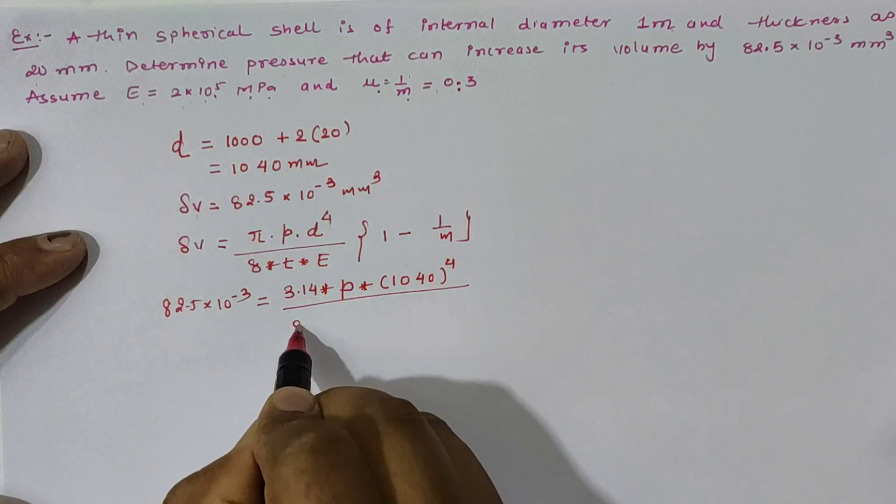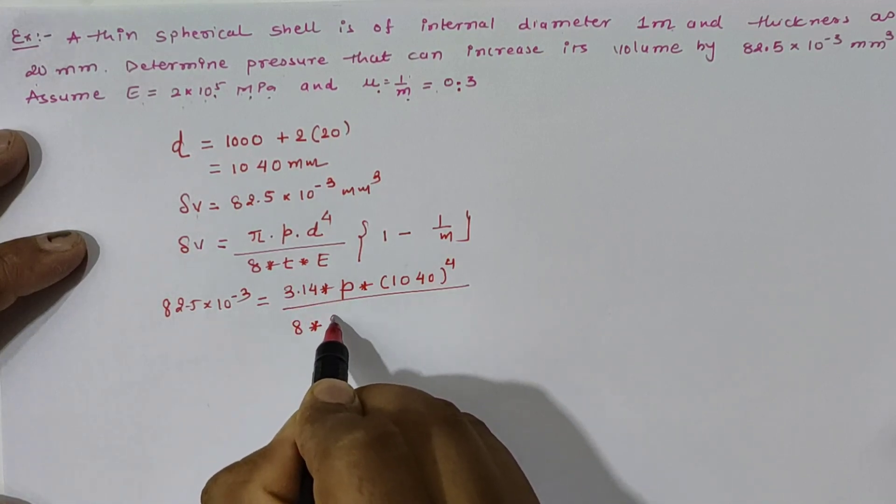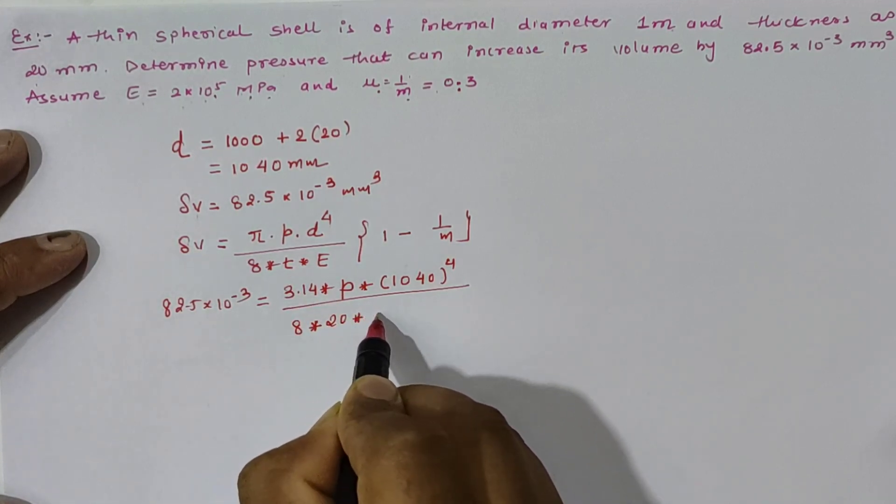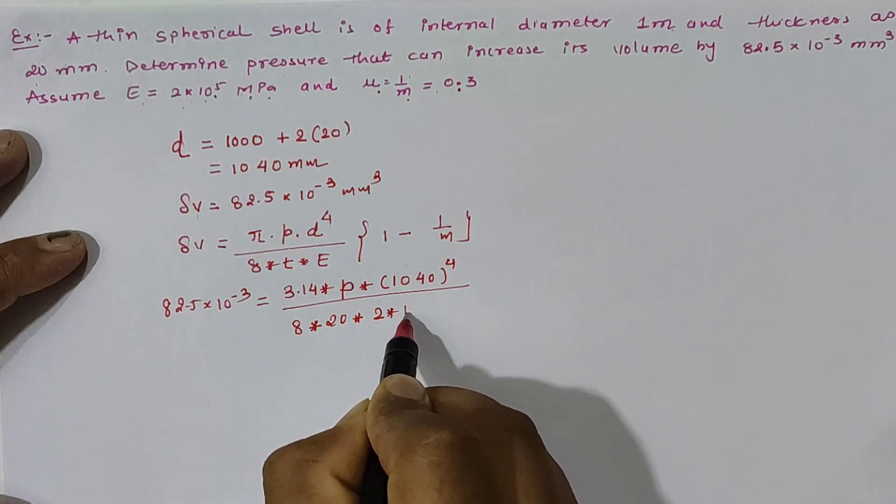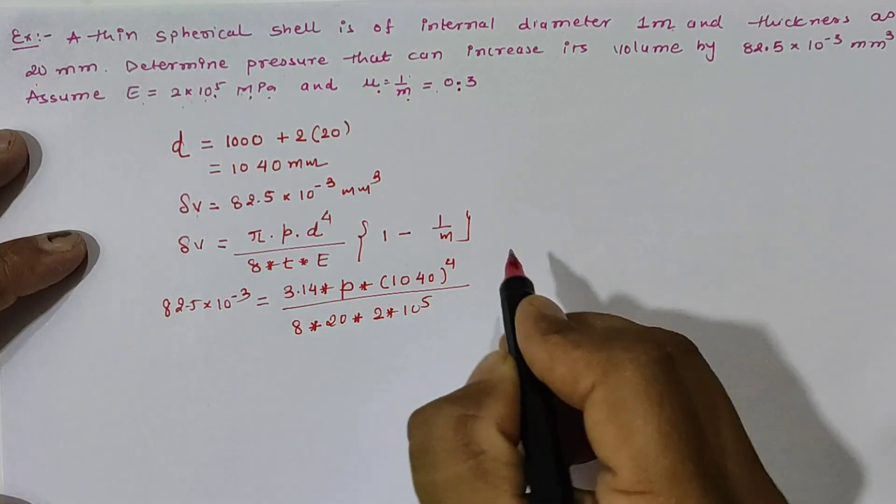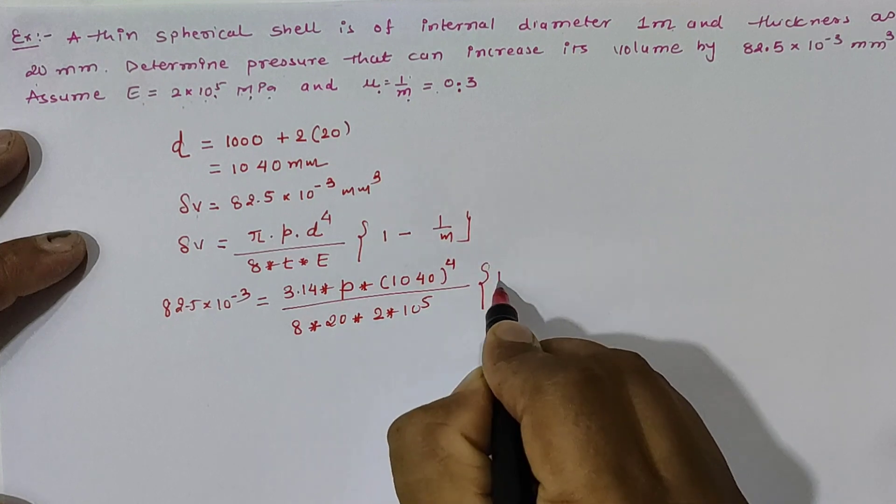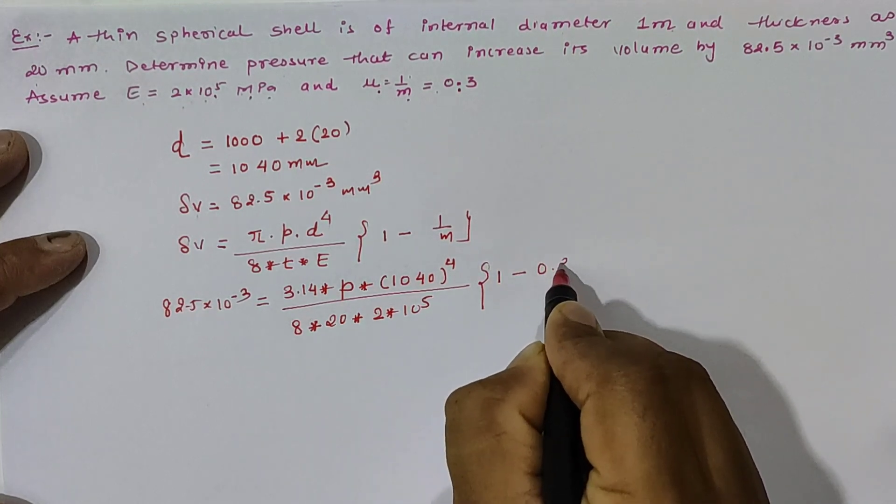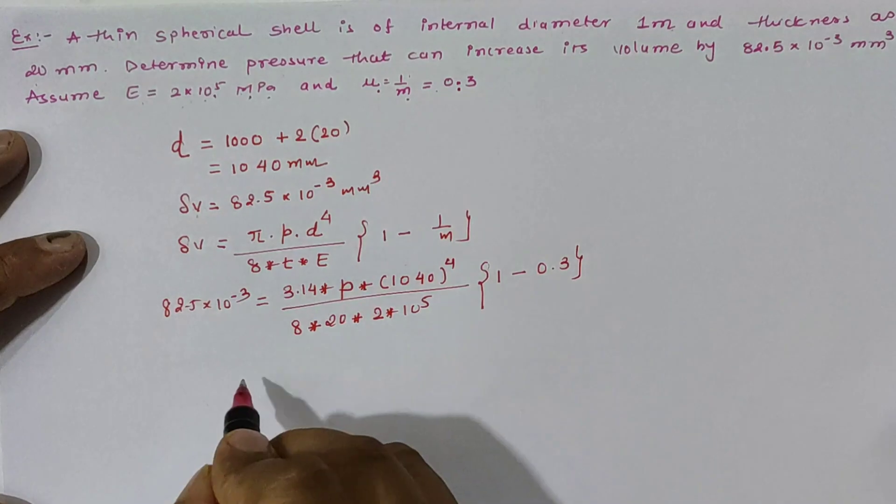divided by 8 as a constant value, thickness is given as 20 mm, capital E as 2 × 10^5, and 1 is constant and 1/m as 0.3.